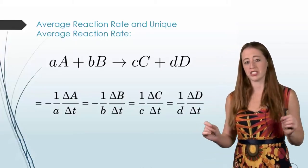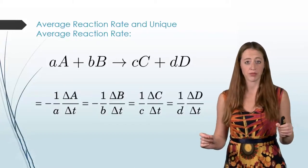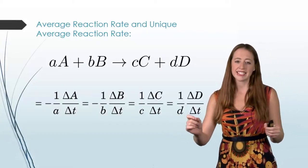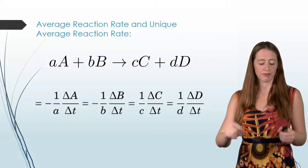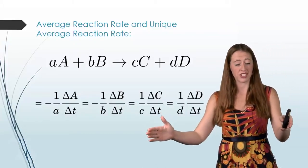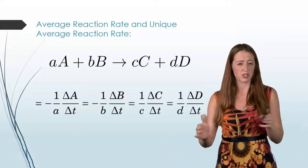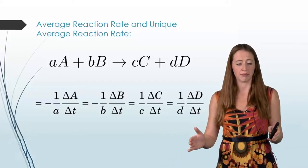This is going to be kind of true with our average reaction rates too. The average just looks at one particular time point, or one set of time points. It doesn't look at one point in time. So again, average reaction rate looks at a range from one point to another point. And it's only true during that particular area of time.